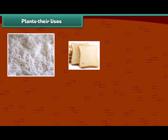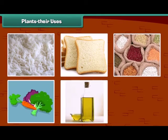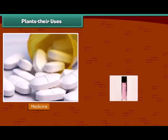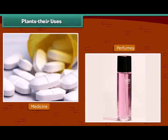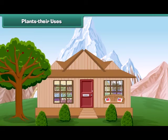We know that we get our food items from plants. Besides food items, we also get many other things from plants. Many medicines and perfumes are made from plants. Plants also give us wood, and in some places, houses are made of wood.